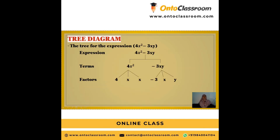Now let me explain using a tree diagram for the expression 4x² - 3xy. Here it will be clear how the terms and factors are classified. The terms are 4x² and -3xy. The factors of 4x² are 4 × x × x. And for -3xy, the factors are -3 (a constant), x (a variable), and y (another variable). Their product forms the term -3xy. So the factors of 4x² are 4, x, and x; and the factors of -3xy are -3, x, and y.